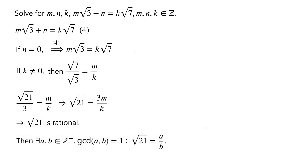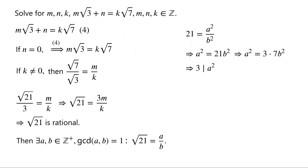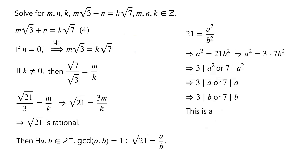Then there exist positive integers a and b with gcd(a, b) = 1 such that √21 = a/b. Squaring both sides: 21 = a²/b², so a² = 21b² = 3 × 7 × b². This implies 3 divides a² or 7 divides a². By Euclid's lemma, 3 divides a or 7 divides a, and consequently 3 divides b or 7 divides b — contradicting that a and b are coprime. So k must equal 0.